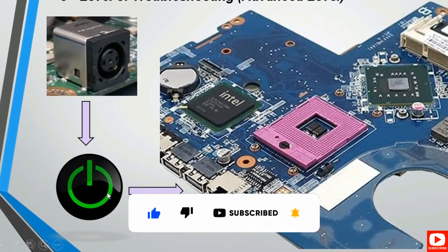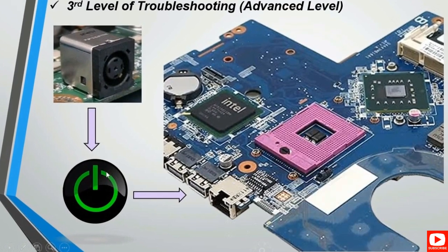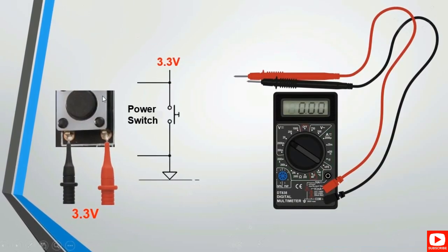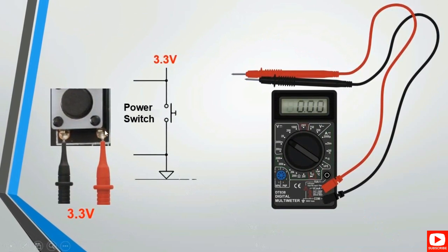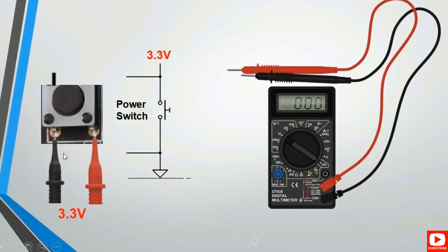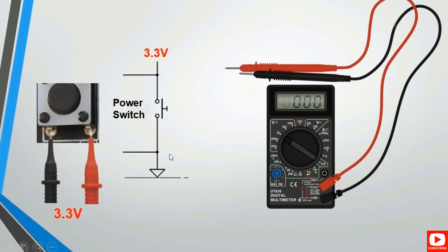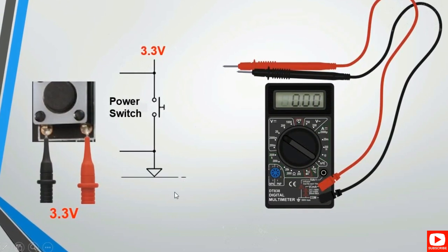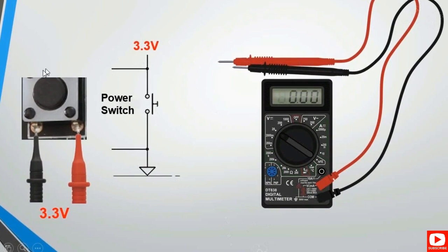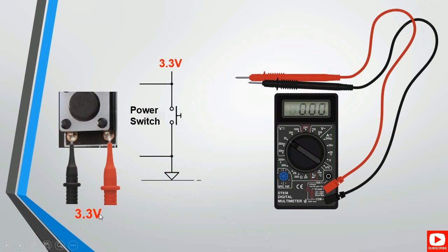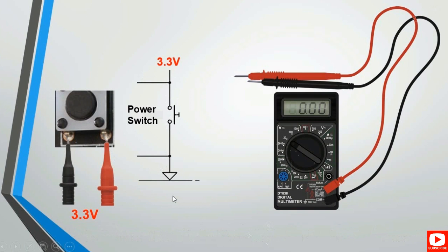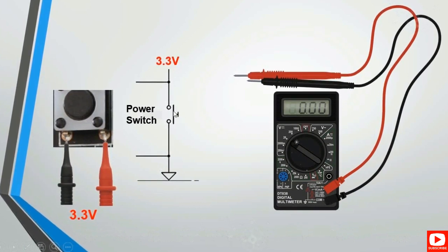The next step is the power switch. If the power jack is good, check the power switch. You should check for 3.3 volts at the power switch. When you disassemble the laptop, the power switch has four terminals — two grounds and two high terminals. Using the multimeter, check for 3.3 volts without powering on the laptop — just by plugging in the adapter, you should find 3.3 volts at the power switch terminals.